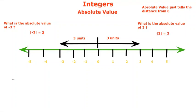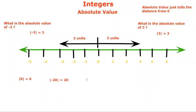Let's check some other questions. The absolute value of plus six: since it is six units away from zero, the answer is six. The absolute value of minus twenty: since it is twenty units away from zero, the answer is twenty. The absolute value of minus one hundred fifty: since it is one hundred fifty units away from zero, the answer is one hundred fifty. Look at all these answers — aren't they all positive?